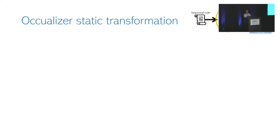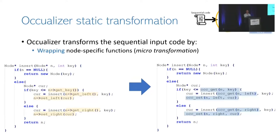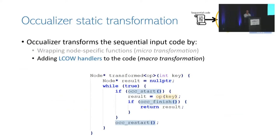The transformation of sequential code into concurrent code implementing localized copy-on-write is a combination of two families of source-to-source code transformations. The first, called microtransformations, replaces all memory accesses of nodes with functions imported from the OCCUalyzer synchronization library, managing all copying and locking logic. The second, macrotransformations, injects calls to the synchronization library before and after the execution of the whole operation, tracking when an operation starts and ends and performing the localized copy-on-write logic accordingly.